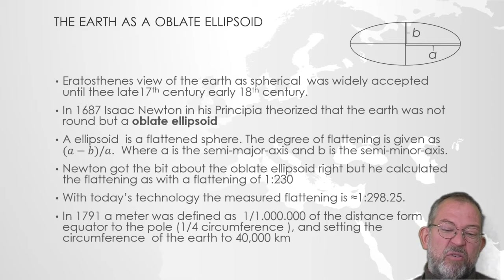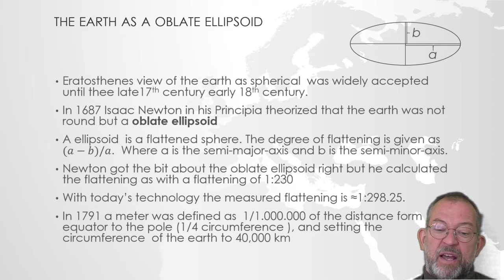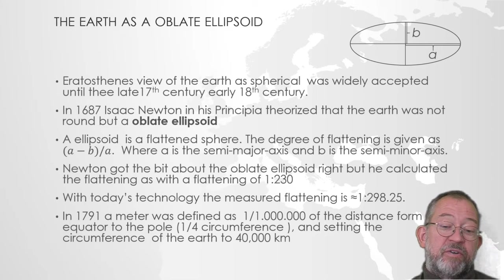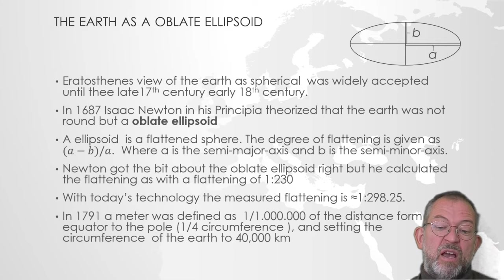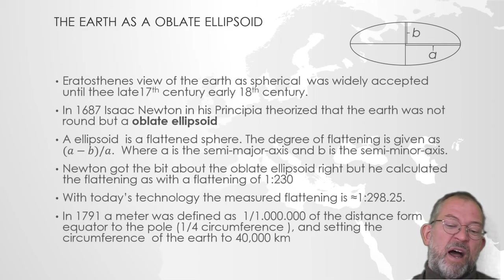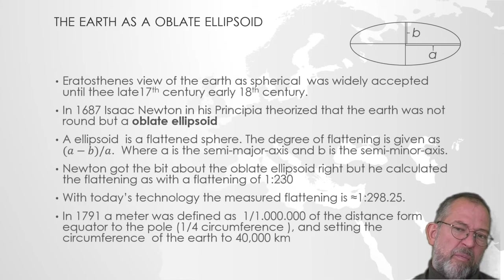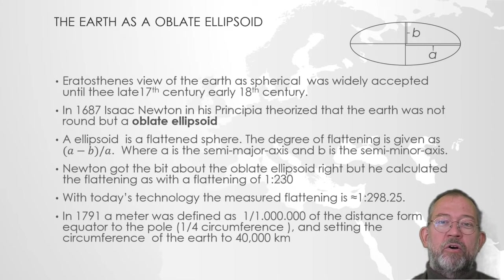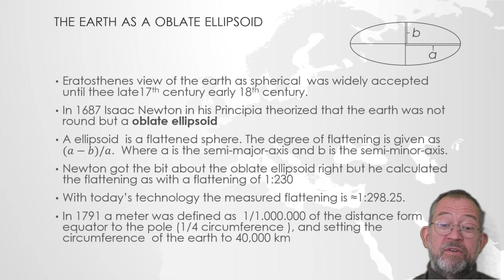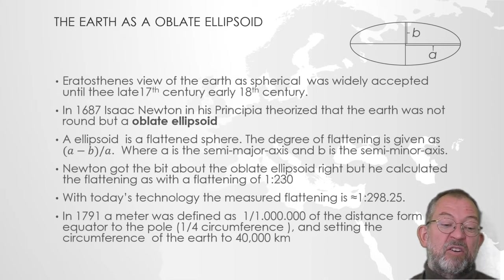Today we say that the reciprocal value of the flattening is 1 to 298.25. Newton didn't get the flattening right, primarily because although he had the theory of gravity, he did not know that the mass of the Earth is unevenly distributed — and that really changes the calculation quite a lot.